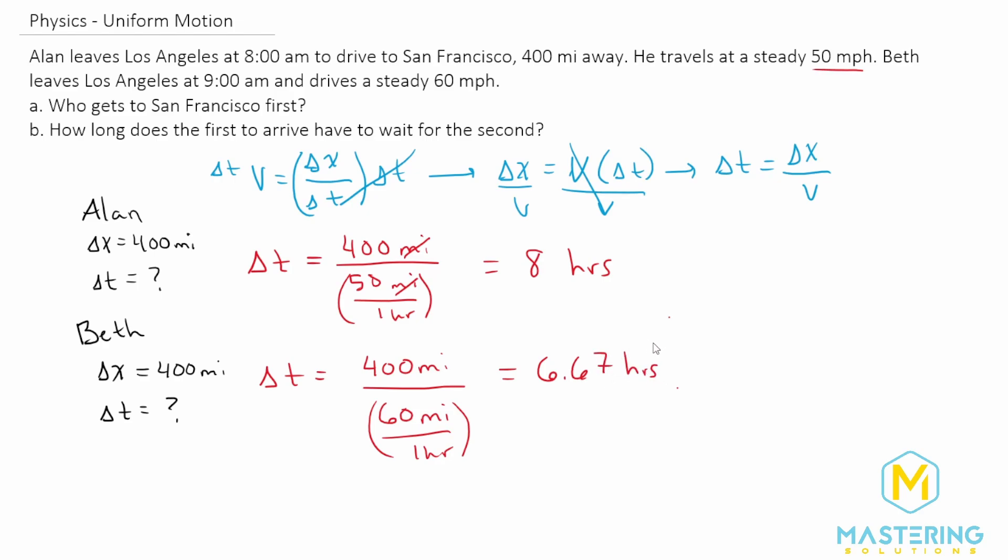Before you jump and say it had to be Beth then, you just want to think that they're leaving at different times. So if it takes Alan eight hours, but he leaves at eight in the morning, that's going to be 16 o'clock, which is the same as 4pm, is when he'll arrive.